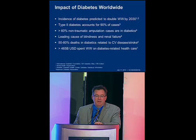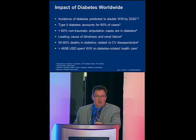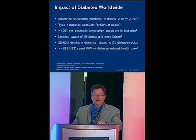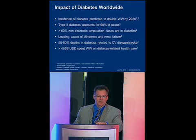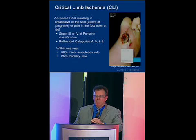What's the impact of diabetes? It's predicted to double by 2030. Type 2 diabetes, which is really related to obesity, accounts for about 90% of these cases. Greater than 60% of non-traumatic amputations occur in diabetics. It's a leading cause of other comorbidities — blindness, renal failure. Cardiovascular deaths are the leading cause, way beyond cancers. And $465 billion is spent worldwide on diabetic health-related issues. It's really an epidemic causing a crisis worldwide.